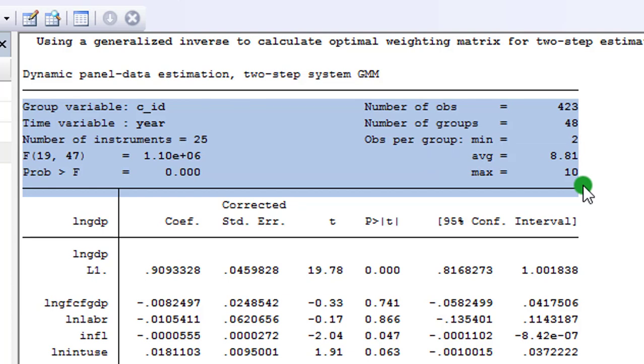And which also tells you whether your model is correctly specified. You have the IDs for the groups and the IDs for the year. You have information on the number of your instruments. And you have information on the value of the F statistics and the probability value. You also have information on the number of observations, the number of groups in your data. And you have statistics relating to observations. If you notice that I have 48 groups here, but in my panel, I have 54. So maybe 6 of them do not have sufficient observations. That is why Stata dropped them.